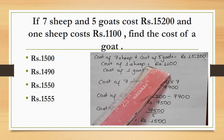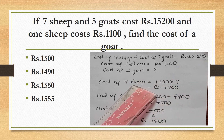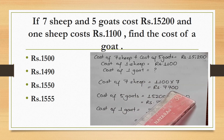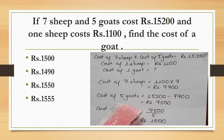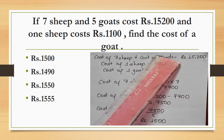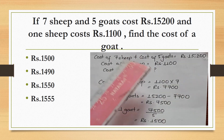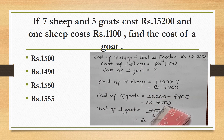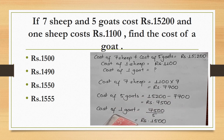Cost of 7 sheep = 1100 × 7 = Rs.7,700. Cost of 5 goats = 15,200 − 7,700 = Rs.7,500. So cost of 1 goat = 7,500 / 5 = Rs.1,500.